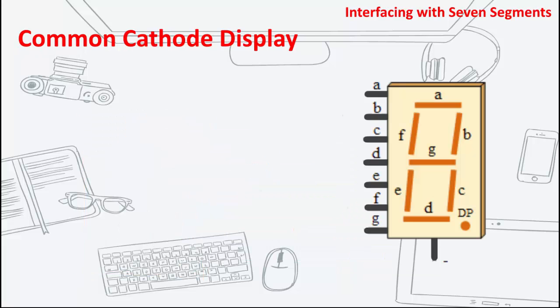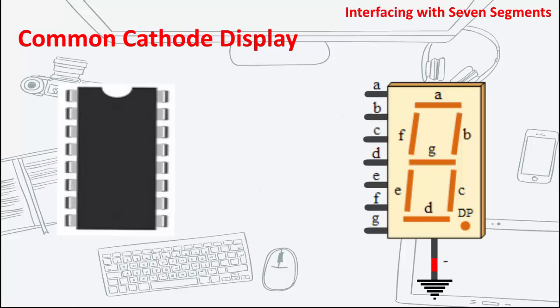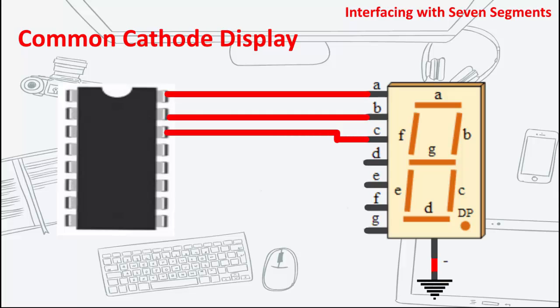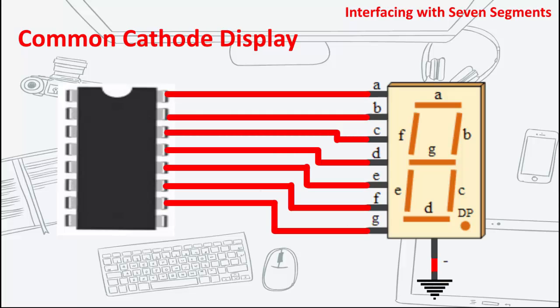In the common cathode, the common pins are tied to ground, while the others are connected to a controller. To turn on these segments, the pin should be driven high.